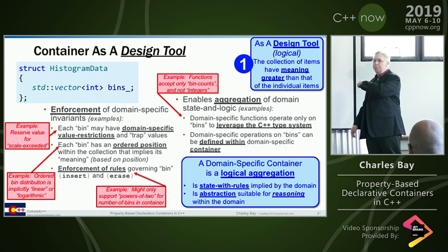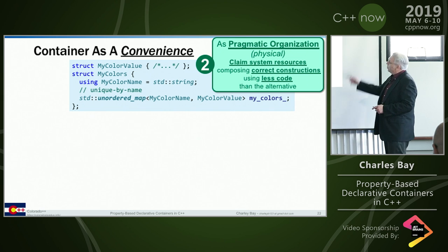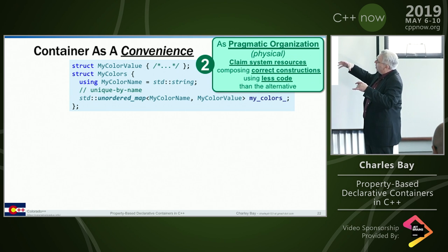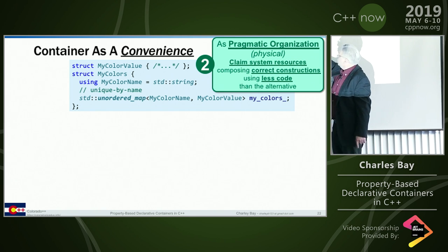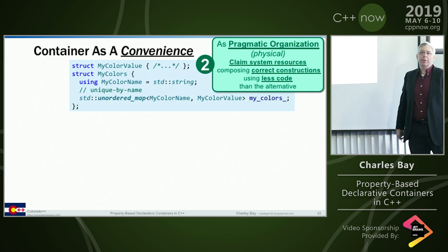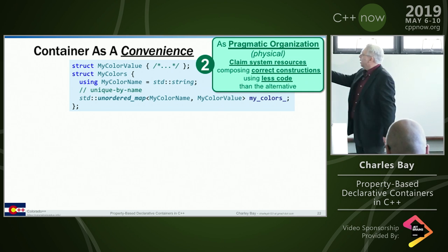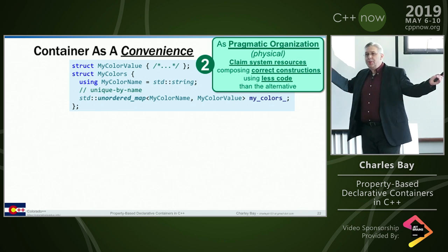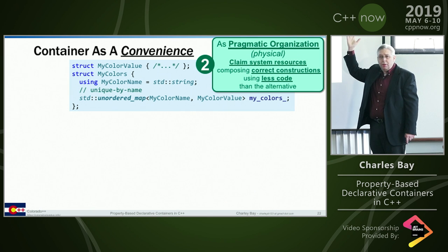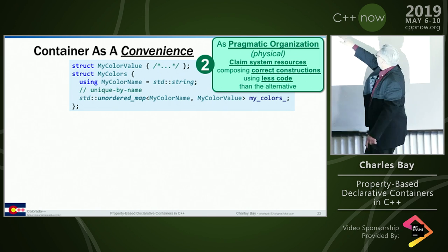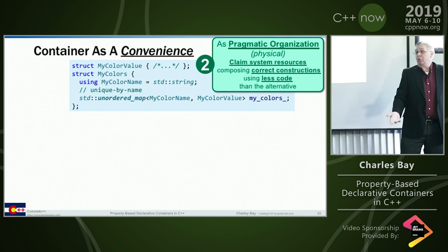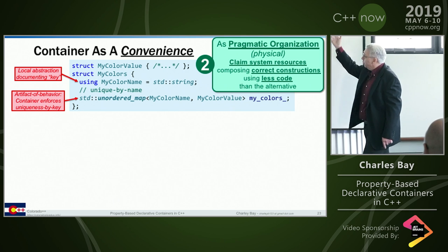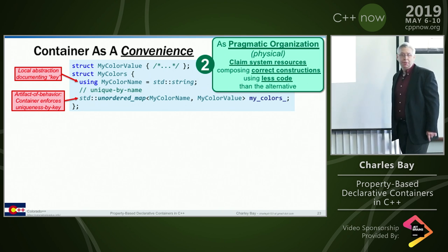The bins are ordered, might be linear or log distribution. Here's another example: a color value struct, zero-cost abstraction wrapping unordered_map - mapping a name to a value for colors. Pretty cheap, pretty easy, zero runtime overhead. I now have a higher-level thing called 'my colors' to express that logic. I can use local type aliases, local rules, local domain logic. Turns out the std library does that - it's a bucket of stuff including type aliases and artifacts of enforcement for constraints.